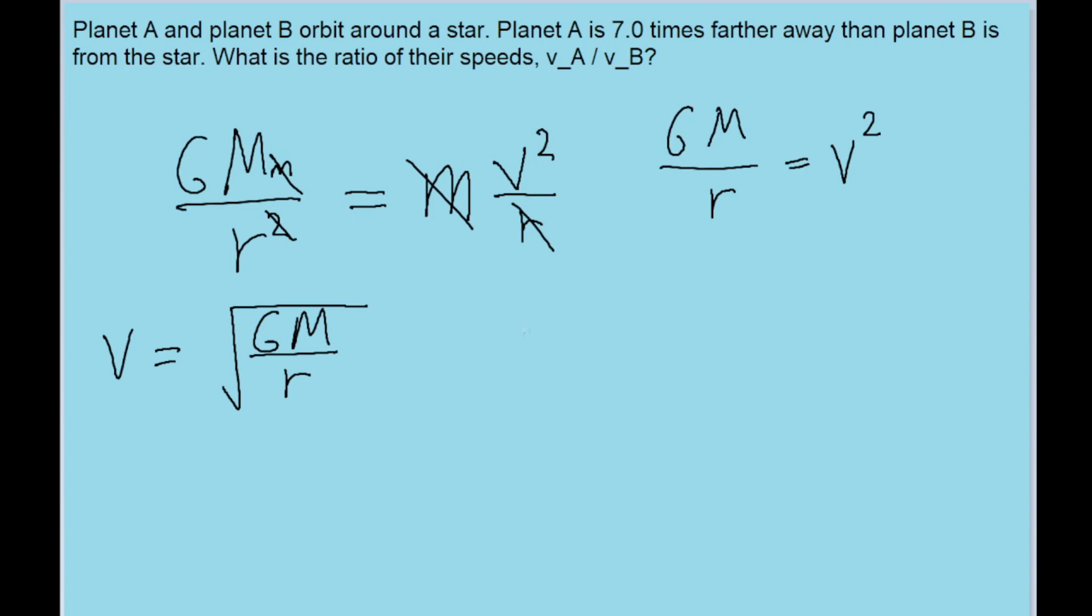So if you want to take a ratio here, let's say that a ratio V sub A over V sub B is equal to, and we're just going to write that equation again, except for the different radiuses.